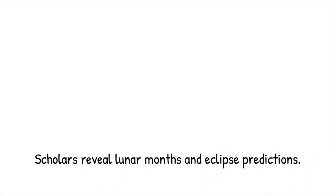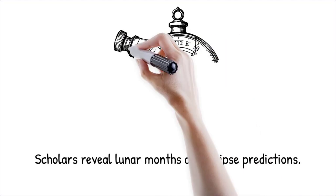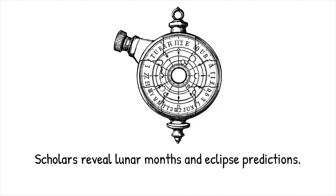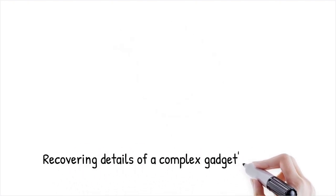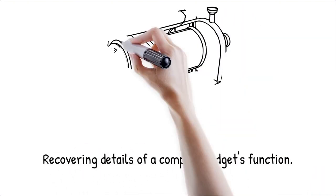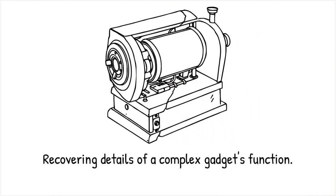Scholars have pieced together portions of the inscriptions to reveal references to lunar months and eclipse predictions, supporting the device's proposed functions. It's like putting together a partially damaged instruction manual. You slowly recover the details that explain how a complex gadget works.